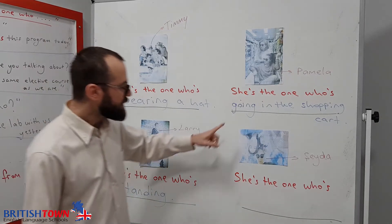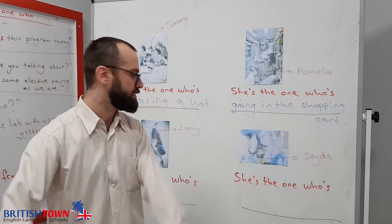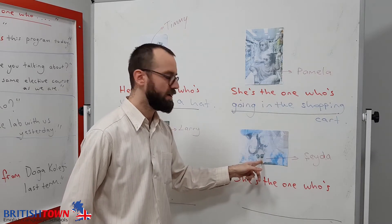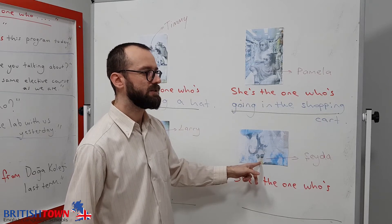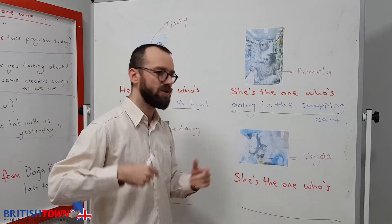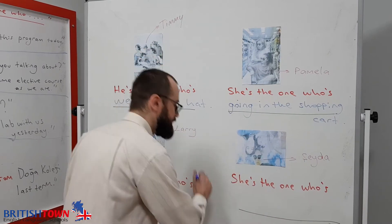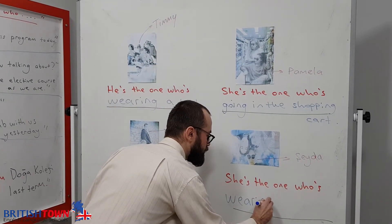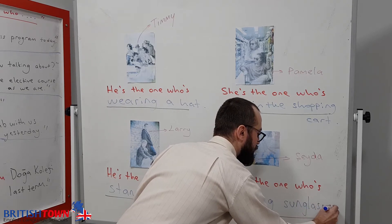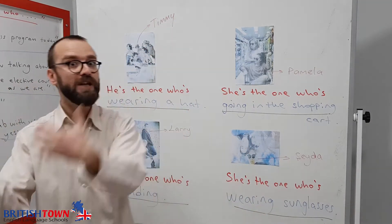Last picture: three girls, and one of them is Shayda. Which one is Shayda? How would you define her? She is the one who is wearing sunglasses. Shayda is the one who is wearing sunglasses — Shayda güneş gözlüğü takan olan.